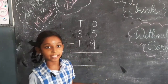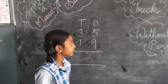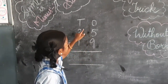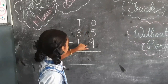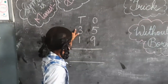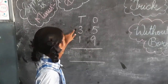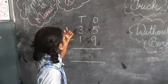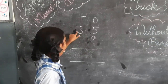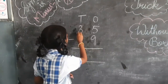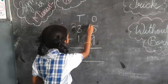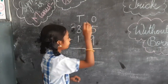35 minus 19. Here, 5 is smaller than 9, so we cannot subtract directly. Here comes the borrowing concept. We can borrow from the tens place. 3 will become 2 and 5 will become 15.